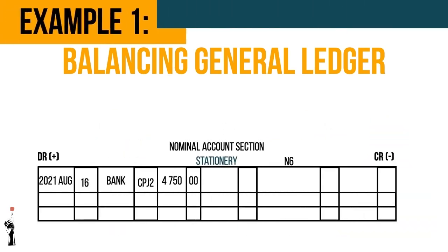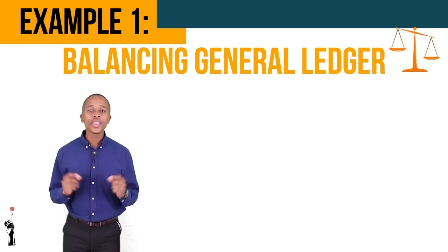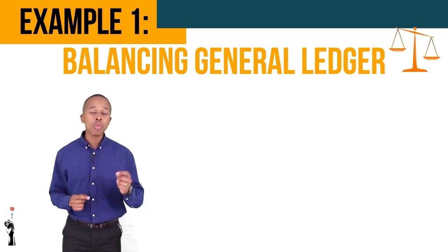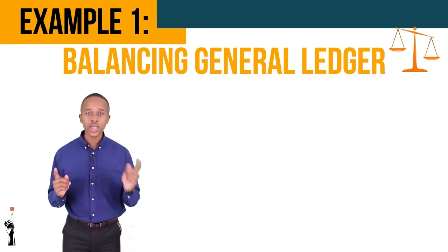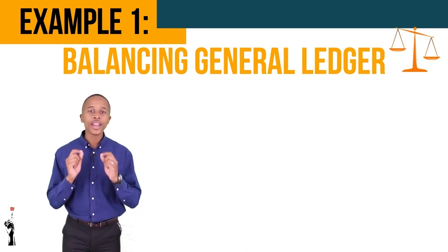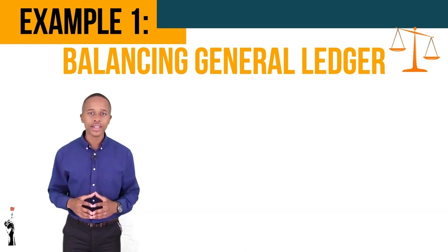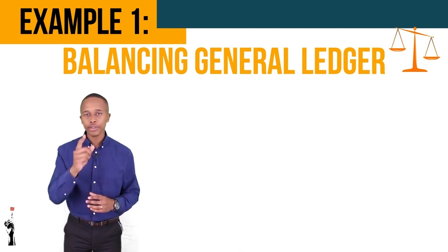When the accounts are only on one side, then only one side of the ledger has been added up — this is not balanced. When the account has more than one entry on both sides, then the ledger is balanced. Let's see what this looks like in an example.